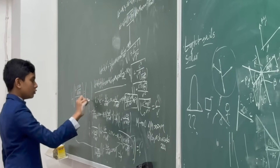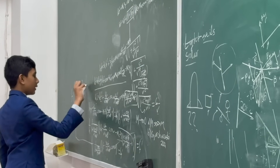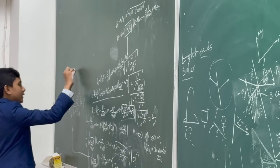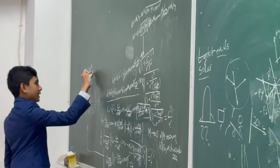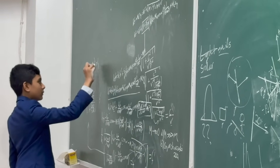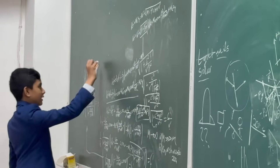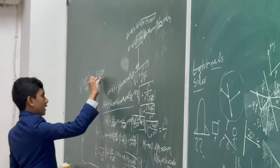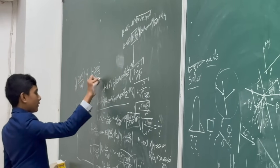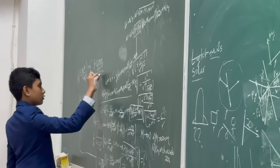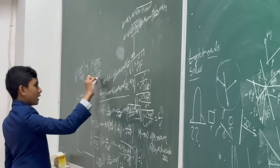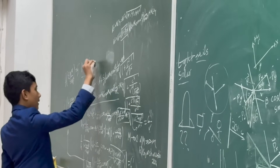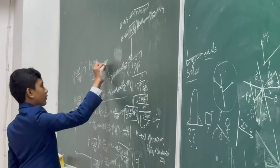We have 1 minus c cosine alpha over v sine theta, and 1 plus cosine beta over sine theta, and this is equal to f prime. We also have the idea that f times sine alpha over sine beta is equal to f prime. So then we get that 1 minus c cosine alpha over v sine theta divided by 1 plus cosine beta over sine theta is equal to sine alpha over sine beta.